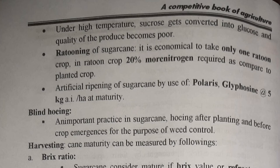Ratooning in sugarcane: it is economical to take only one ratoon crop, as in ratoon crop 20% more nitrogen is required compared to planted crops. For artificial ripening, we can use Polaris or Glyphosate at the rate of 5 kg AI per hectare at maturity. Blind hoeing is an important practice in sugarcane — hoeing after planting and before crop emergence for the purpose of weed control.